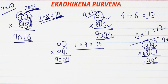So what we have to do? Just multiply the digits at the one place. 2 times 8 is 16. And 1 more than 9 is 10. So 9 times 10 is 90. The answer is 9016.